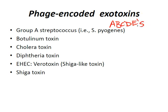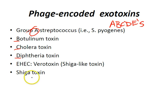That's group A strep, botulism, cholera toxin, diphtheria toxin, E. coli hemorrhagic or enterohemorrhagic E. coli, which is a Shiga-like toxin, and then you also have your Shiga toxin. So that's how you can remember your phage-encoded exotoxins.